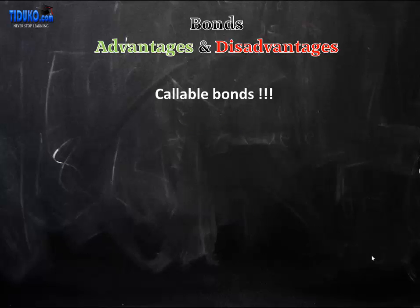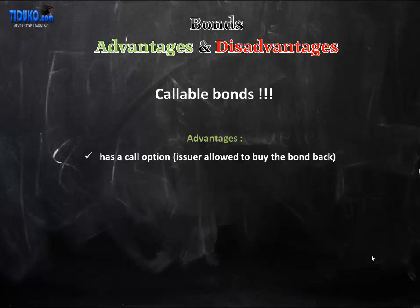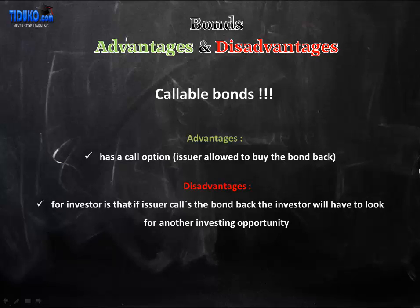The next bond we are going to talk about is the callable bond. A callable bond is a bond where the issuer is allowed to buy the bond back before maturity at a certain call price. The disadvantage for investors is that if the issuer calls the bond, the investor will have to look for another opportunity and will probably have to invest their money at a lower interest rate.